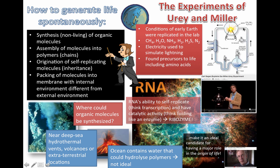Urey and Miller did a very famous experiment where they tried to replicate early Earth conditions. They put in all the molecules concluded to have been present in the early atmosphere and used electricity to simulate lightning, since lightning could have been an energy source to produce these new organic molecules. As a result, the liquid turned brown and analysis showed that things had spontaneously restructured themselves into amino acids — the same 20 amino acids that make up all the proteins in our body today.